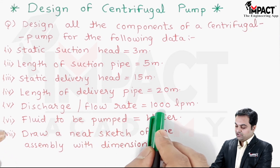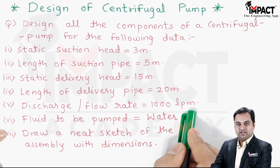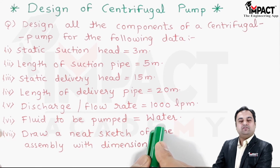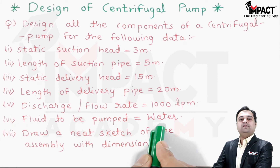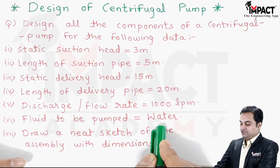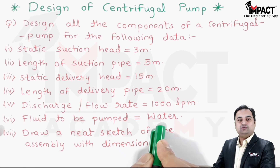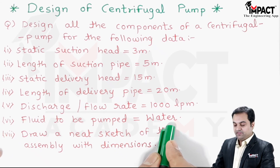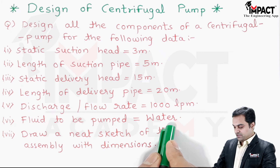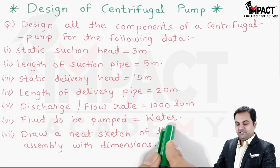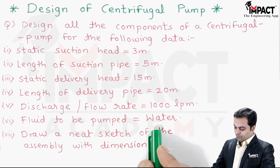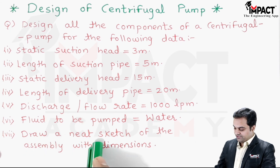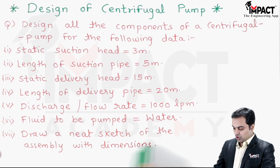The discharge or flow rate is 1000 LPM, that is liters per minute. The fluid to be pumped is water — if the type of fluid is not specified, always assume water. The last requirement is to draw a neat sketch of the assembly with dimensions.